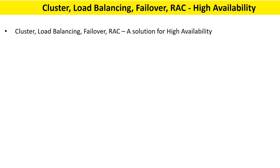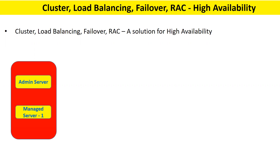So what does high availability mean? Let us understand in a very basic way. Suppose you have a host — a machine — where you have one admin server and one managed server running, and your applications are deployed on managed server 1. If that managed server gets crashed, your application will not be available.